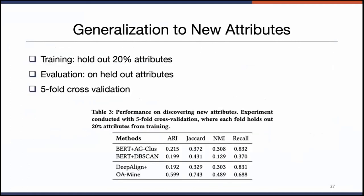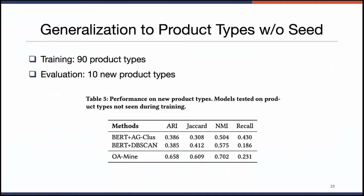We also ran experiments to evaluate new attribute discovery, holding out 20% of attributes with cross-validation. Quantitatively, our method performs much better than the baselines. Another more challenging evaluation tests the model on 10 new product types with no supervision, using 90 types for training. We also have a fair advantage over baseline methods in that setting.